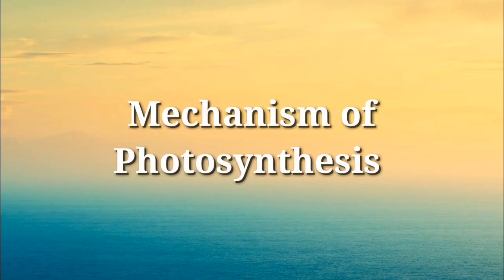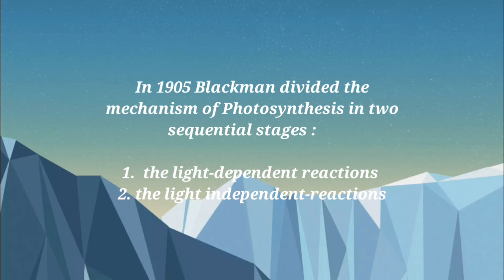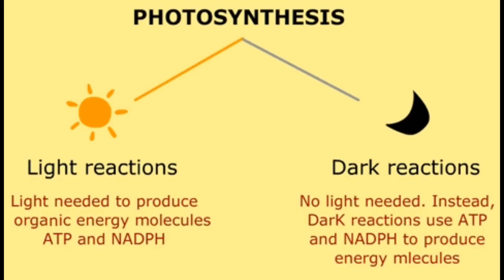Mechanism of photosynthesis: in 1905, Blackman divided the mechanism of photosynthesis into two sequential stages — first, the light-dependent reaction, and second, the light-independent reaction. The light-dependent reaction is known as the light reaction, and the light-independent reaction is known as the dark reaction.